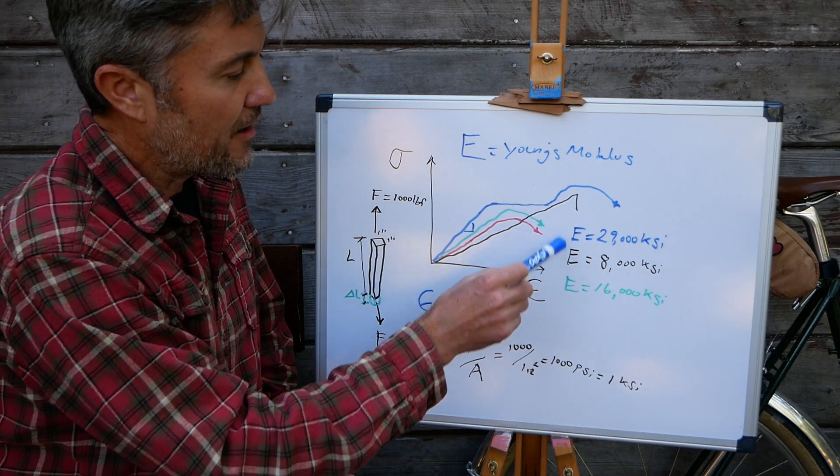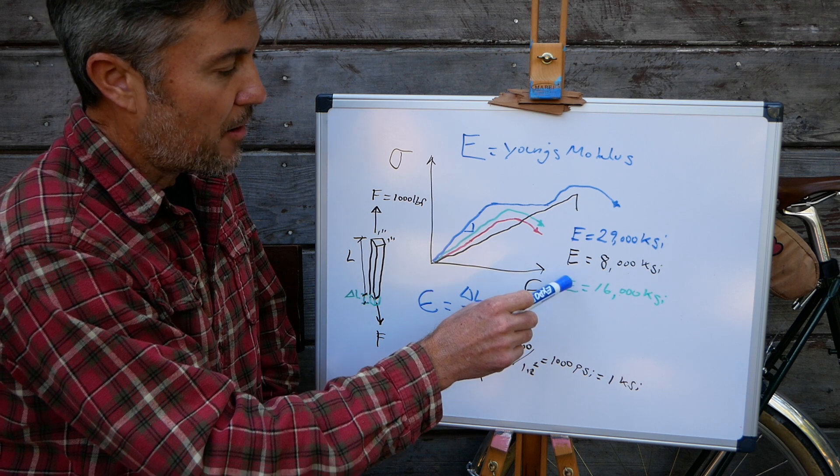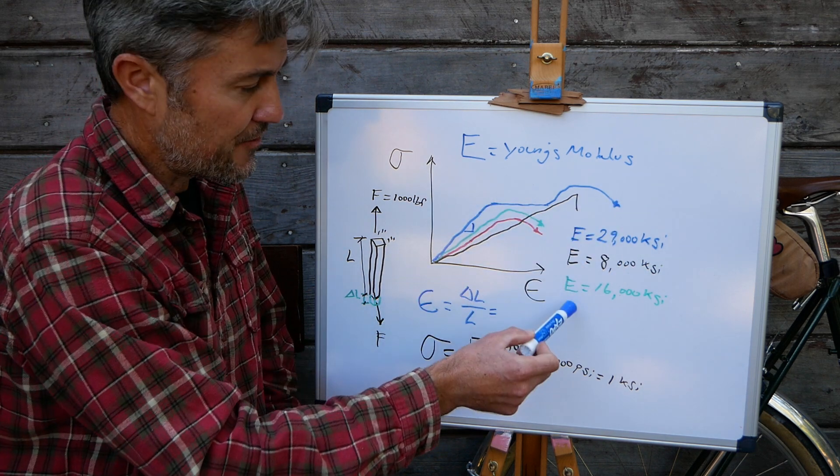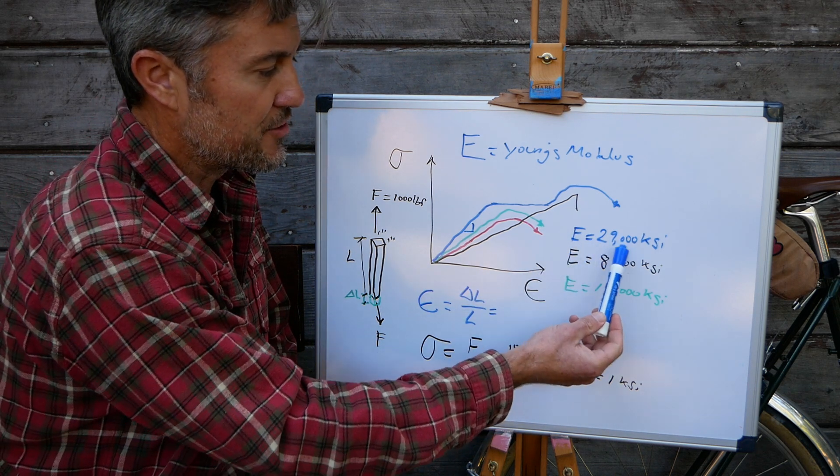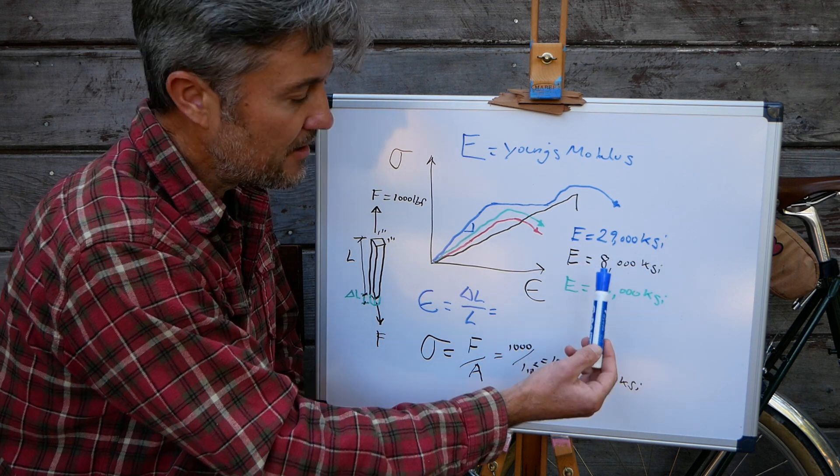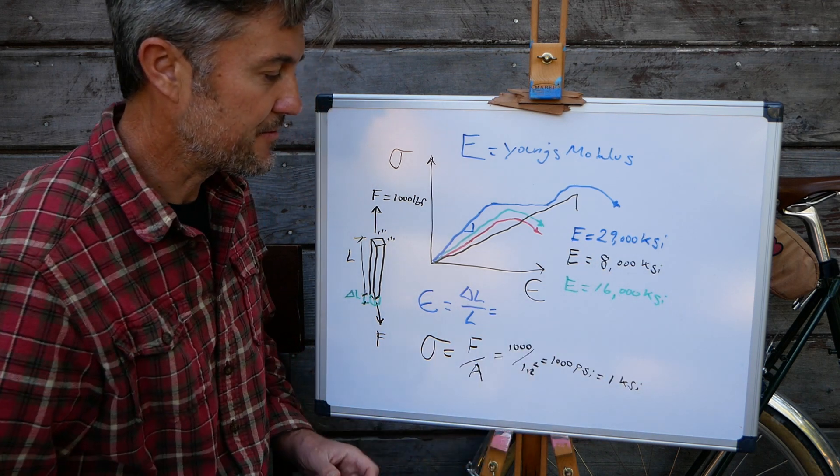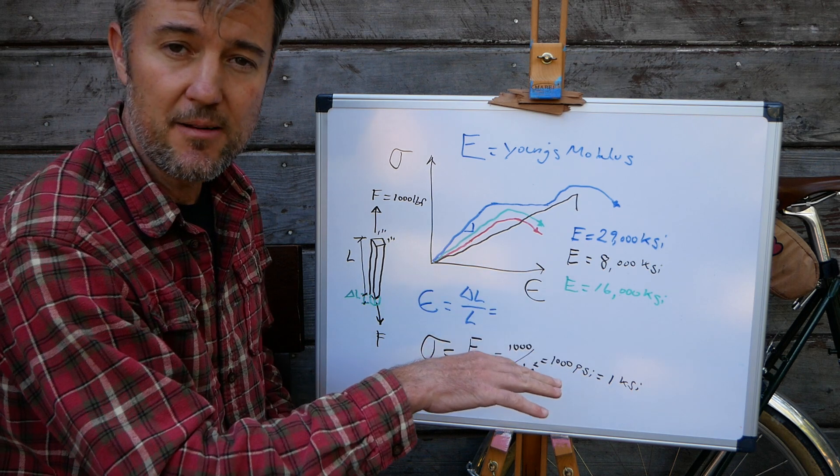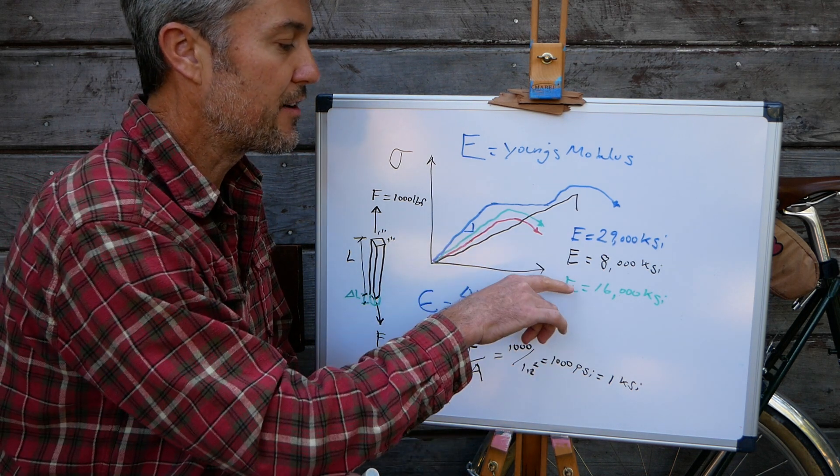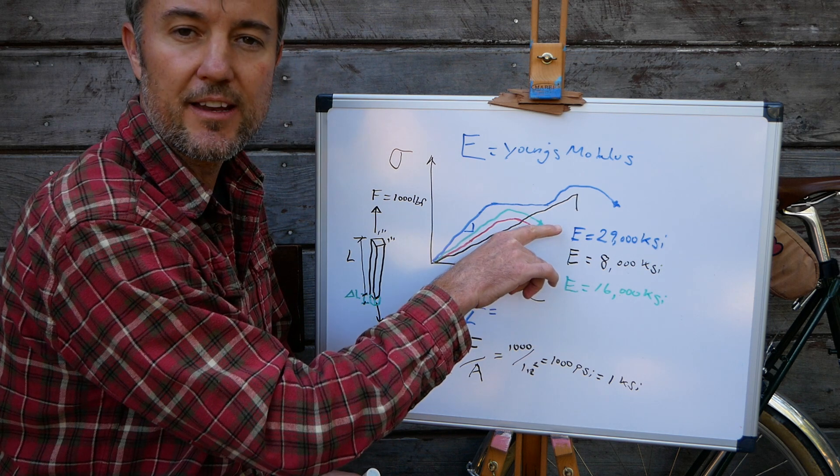Over here I've drawn out the approximate modulus, the Young's modulus for these different materials. So for steel, the Young's modulus is 29,000. Carbon is 8,000 and aluminum is 16,000. I didn't write out titanium because I didn't look it up, unfortunately, but I know that it is a little bit higher than aluminum but a little lower than steel.